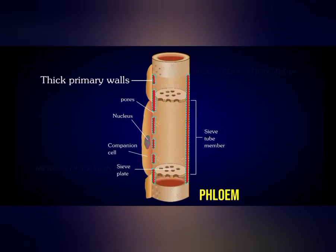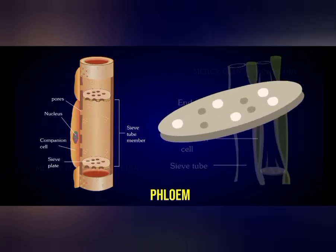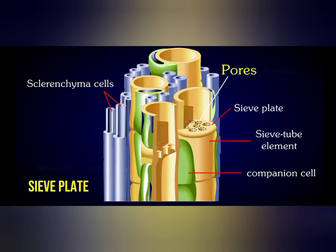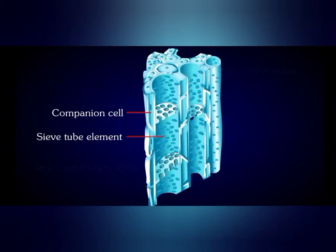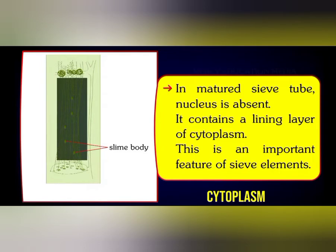Now we will talk about sieve elements, sieve tubes or sieve cells. Coming to the sieve tubes, these are long tube-like structures with sieve plates. Sieve plates contain holes or pores. If you remember your kitchen sink, you can understand what function is performed by the sieve of the sink — it filters. In the same way, sieves in phloem will filter the transported food in phloem.